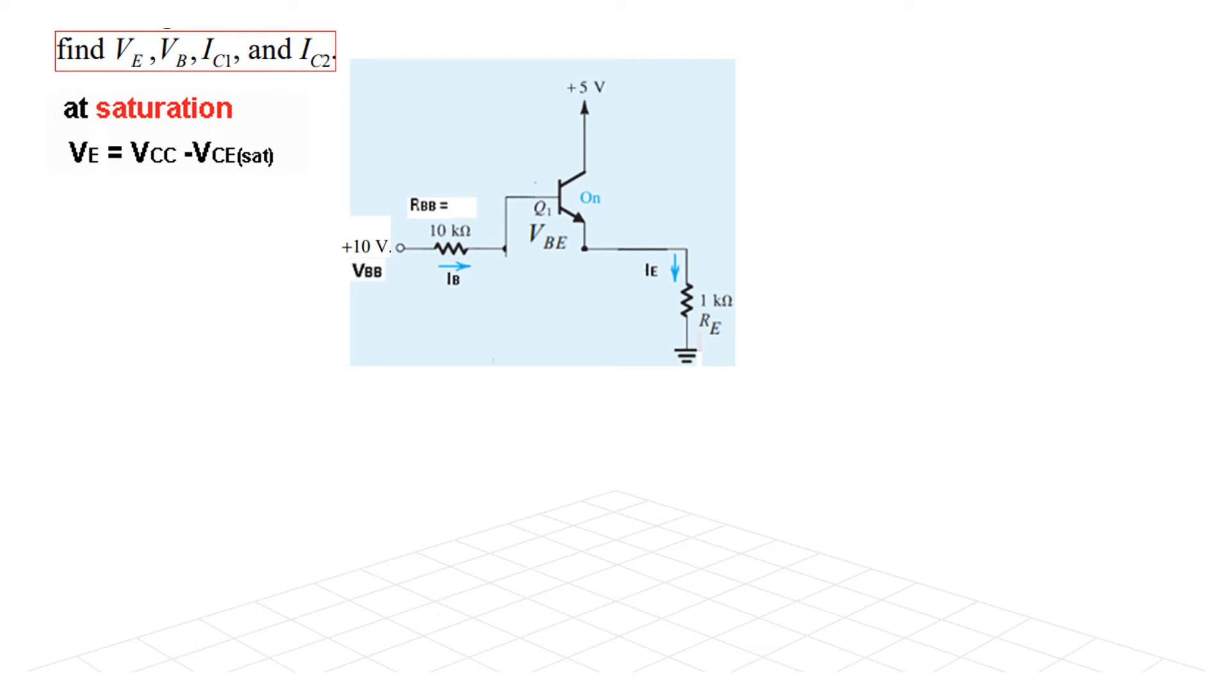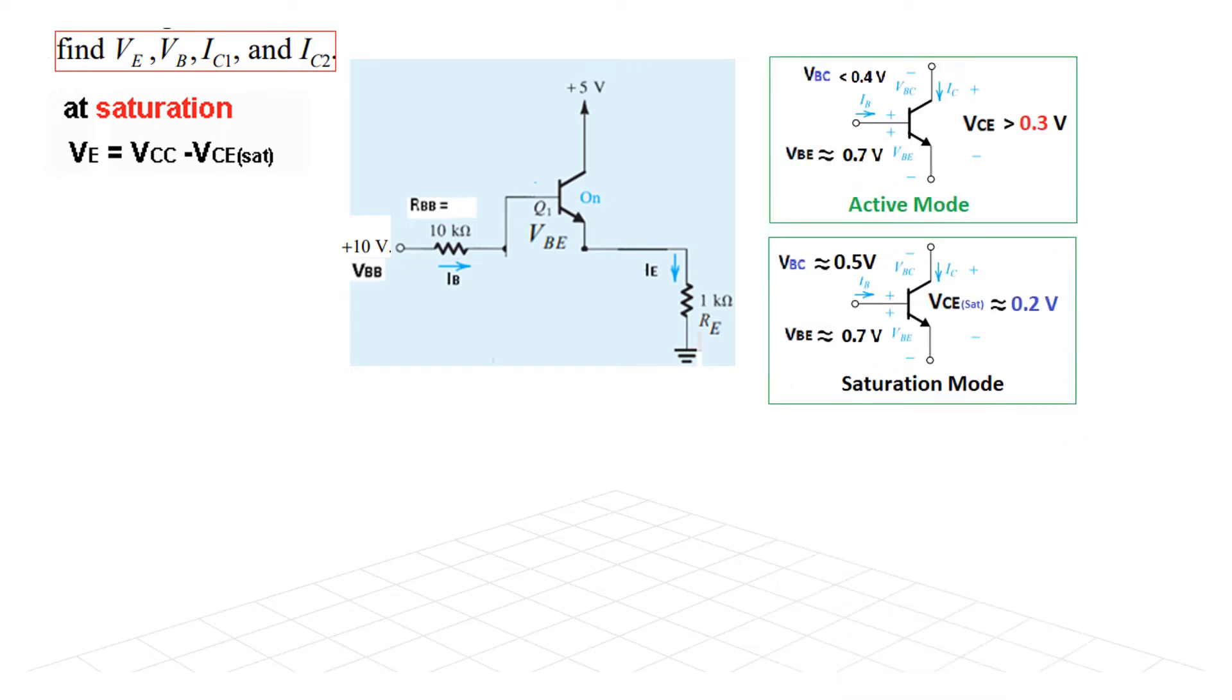So we had concluded that the transistor is in saturation mode. And from here you can see, we can find VE by VCC minus VCE saturation. Now how much is VCE saturation? We had again read earlier that for active mode, VCE has to be greater than 0.3, and for saturation mode, VCE or the edge of saturation...